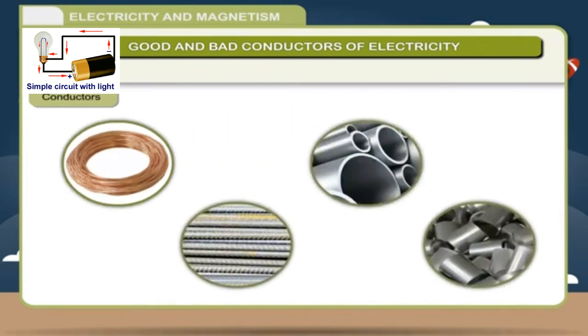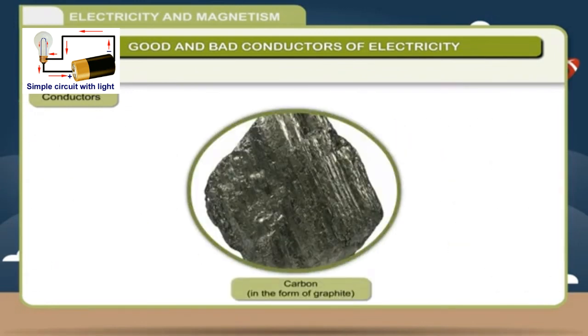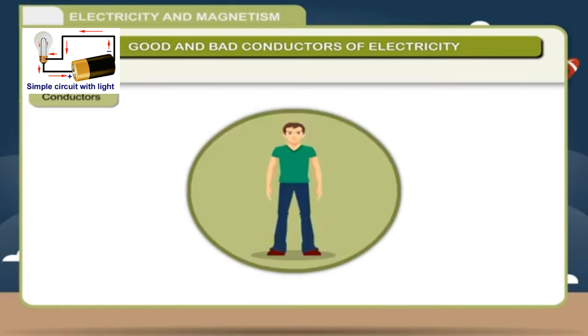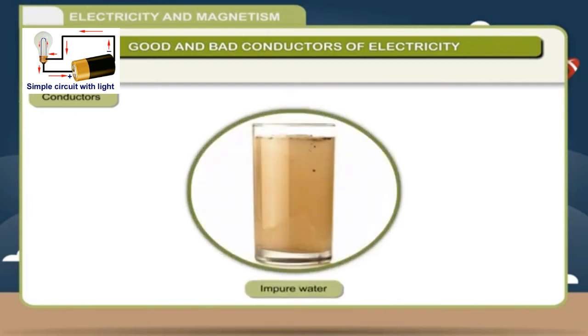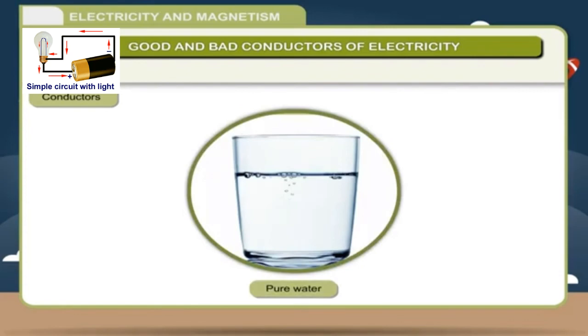Carbon in the form of graphite is the only non-metal which is a good conductor of electricity. The electric current is conducted through human body also. Impure water is a good conductor of electricity whereas distilled water is not.